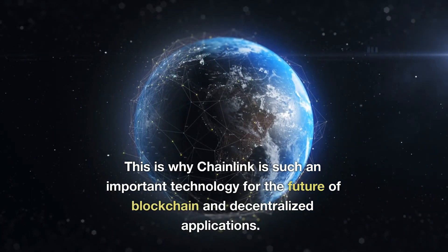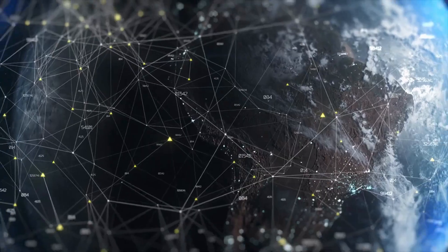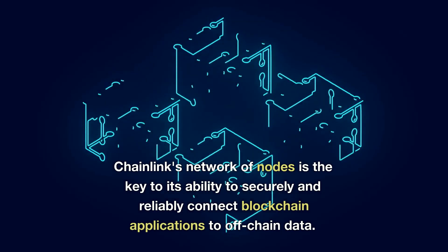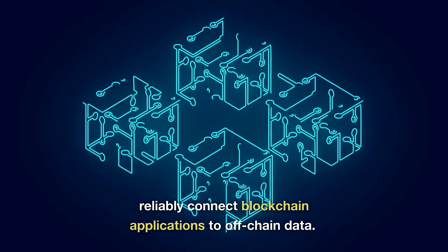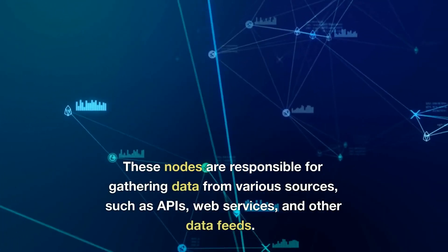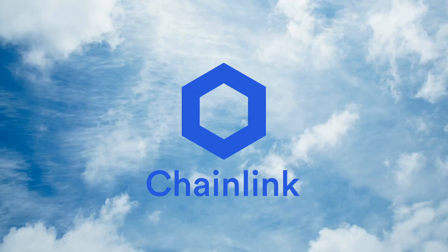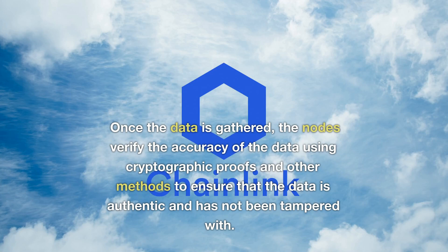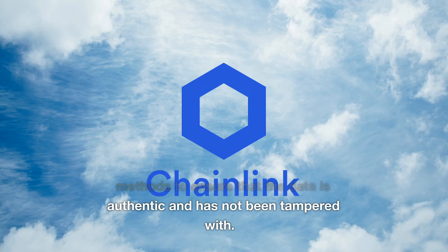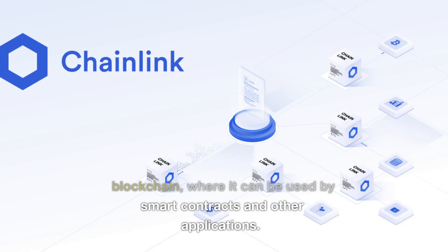This is why Chainlink is such an important technology for the future of blockchain and decentralized applications. Chainlink's network of nodes is the key to its ability to securely and reliably connect blockchain applications to off-chain data. These nodes are responsible for gathering data from various sources, such as APIs, web services, and other data feeds. Once the data is gathered, the nodes verify the accuracy of the data using cryptographic proofs and other methods to ensure that the data is authentic and has not been tampered with. After the data has been verified, the nodes then feed it back to the blockchain, where it can be used by smart contracts and other applications.